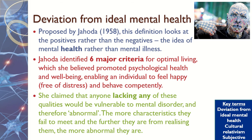Before we look at the six criteria that Jahoda created, let's have a look at what she said. Jahoda said that this definition looks at the positives rather than the negatives — it's about having a positive mental health state rather than looking at it as mental illness. She identified six major criteria for optimal living, and she believed that this promoted well-being and the individual feeling happy so that they can behave and react normally within society.